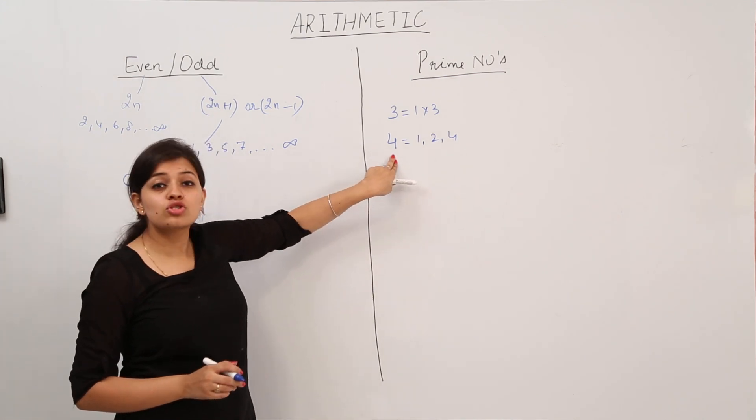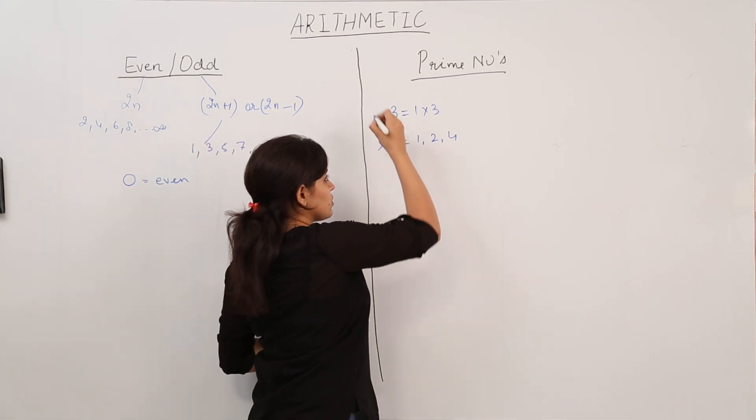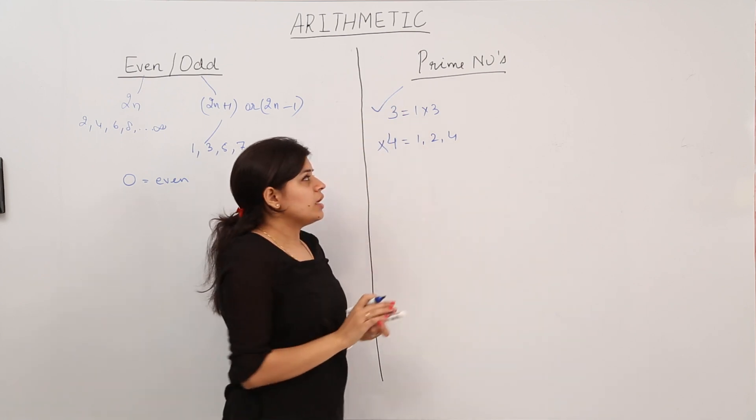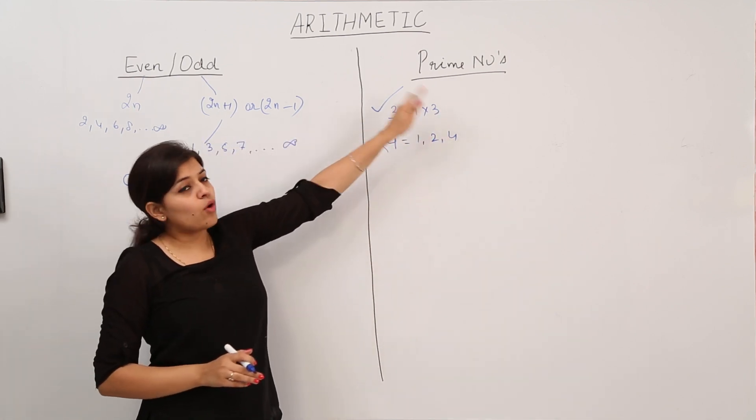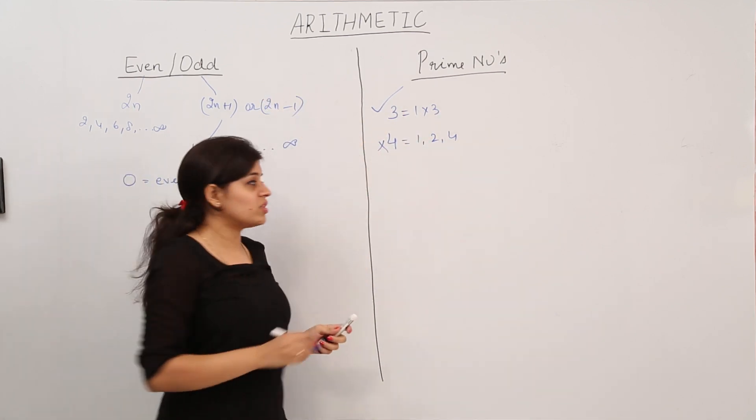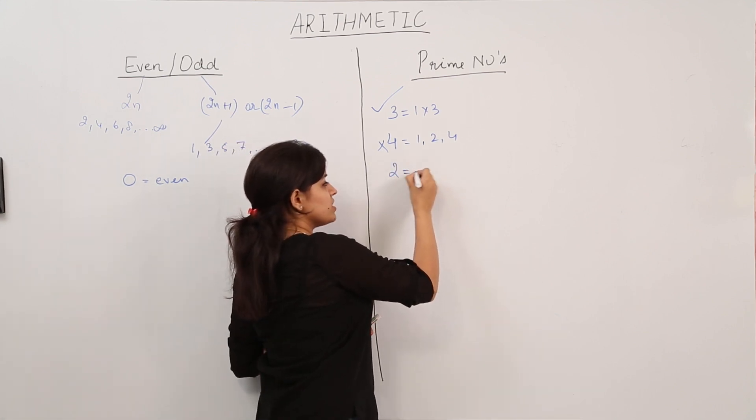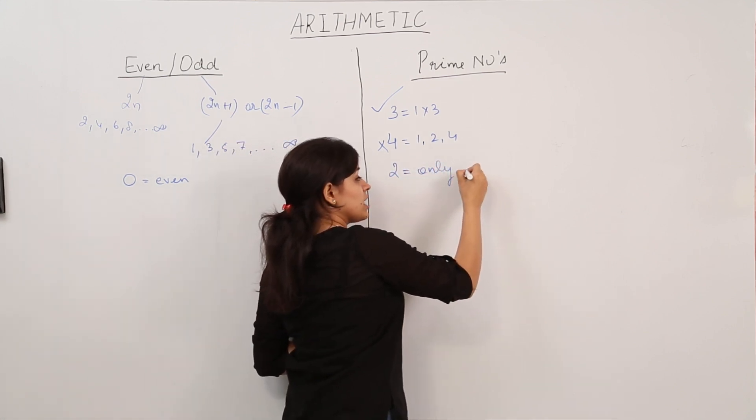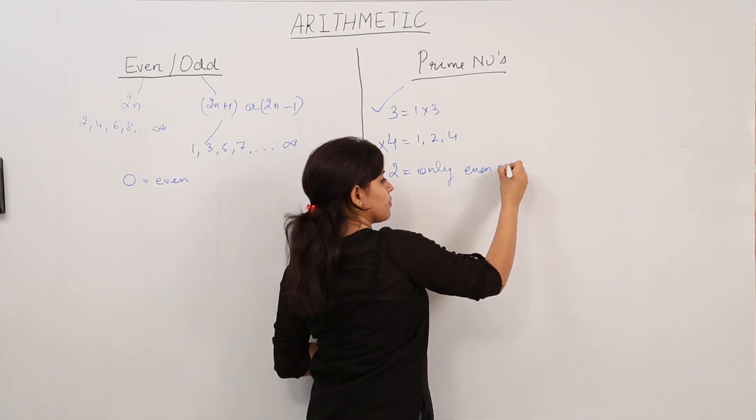So we can say that 4 is not a prime number whereas 3 is a prime number. Now all prime numbers are odd numbers except for an exception, that is 2. 2 is the only even prime number.